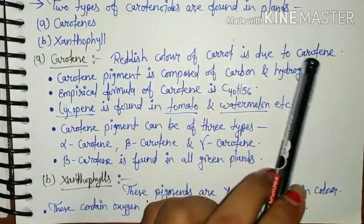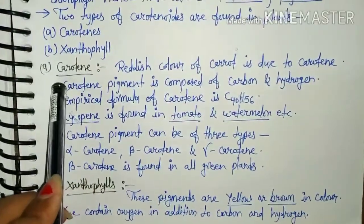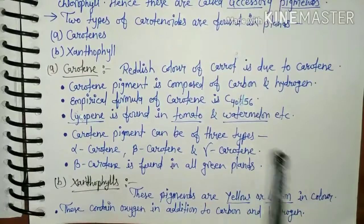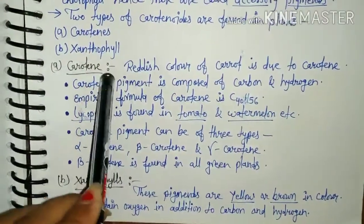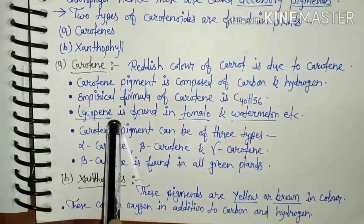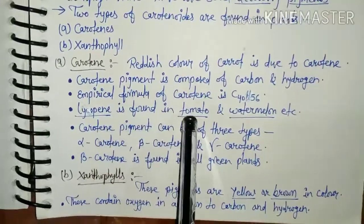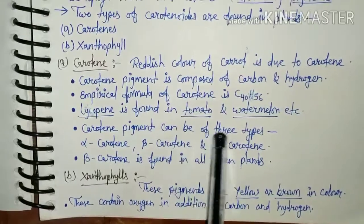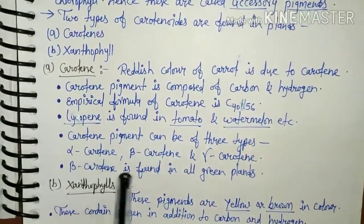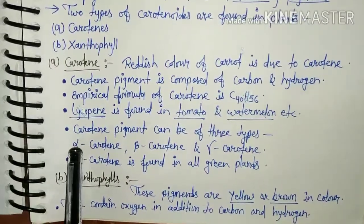Carotins are responsible for the reddish color of carrots and are composed of carbon and hydrogen only. Generally carotins are yellow-orange colored, purely hydrocarbon compounds with empirical formula C40H56, meaning oxygen is absent. Carotin is found in tomato and watermelon, giving them their reddish color. Carotin can be of three types: alpha-carotin, beta-carotin, and gamma-carotin. Beta-carotin is found in all green plants as it is the most common, and is also responsible for the color of carrots.